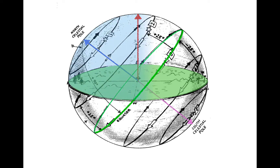Anything above the disc is going to be visible to the observer, and anything below the disc will be out of view. If the observer pulls out a compass, it should point toward the North Pole of the Earth, which is in the same general direction as the North Celestial Pole — so North is over here. Once North is determined, the other compass directions can be labeled as well: South, East, and West.